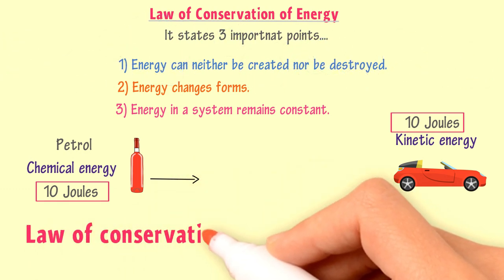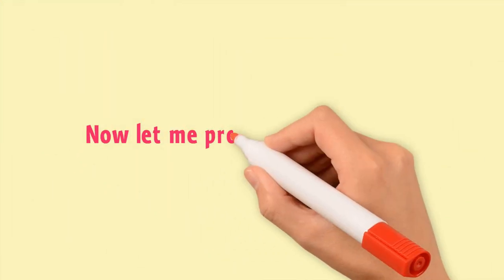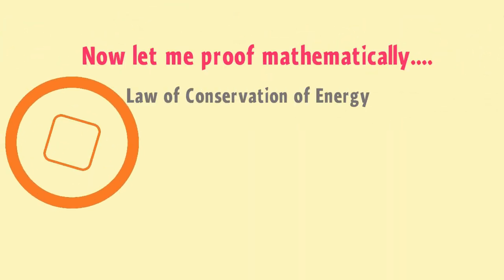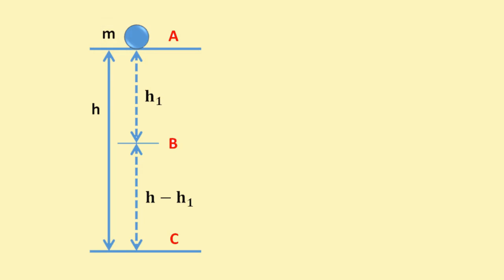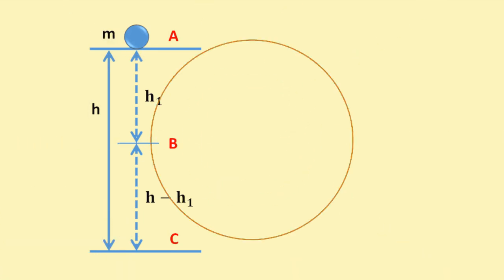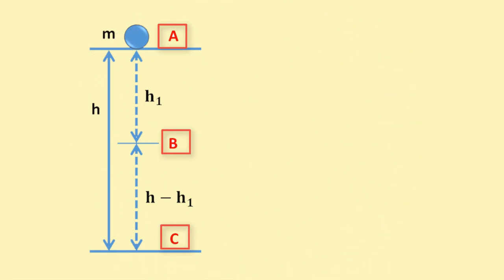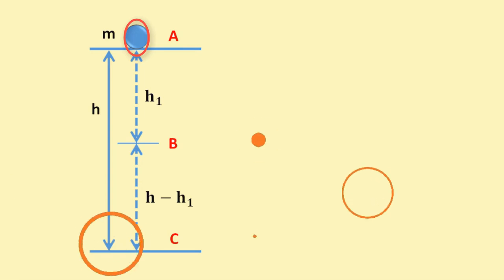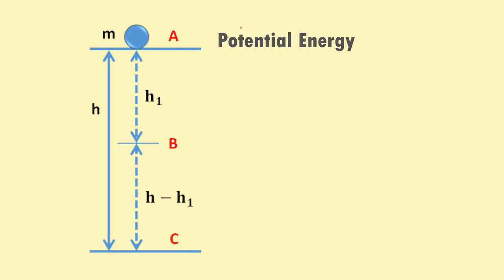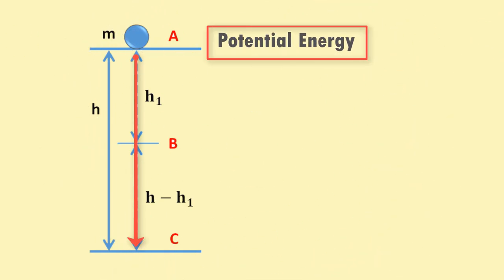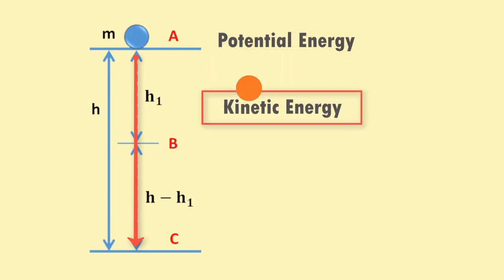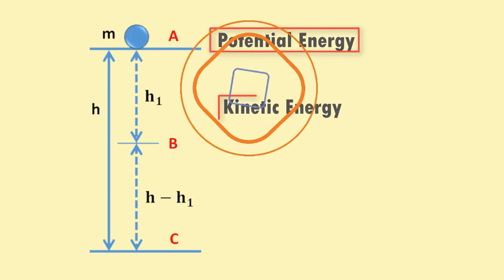Remember that the law of conservation of energy is an ideal case. Now, let me prove mathematically that the law of conservation is 100% authentic. For example, if a ball of mass M is present at point A at a height H from the surface of the ground, I want to find the energy of the ball at points A, B, and C. The height of B is H minus H1. As the ball falls downward, its potential energy gradually changes into kinetic energy, so in this system we encounter two forms of energy: potential energy and kinetic energy.